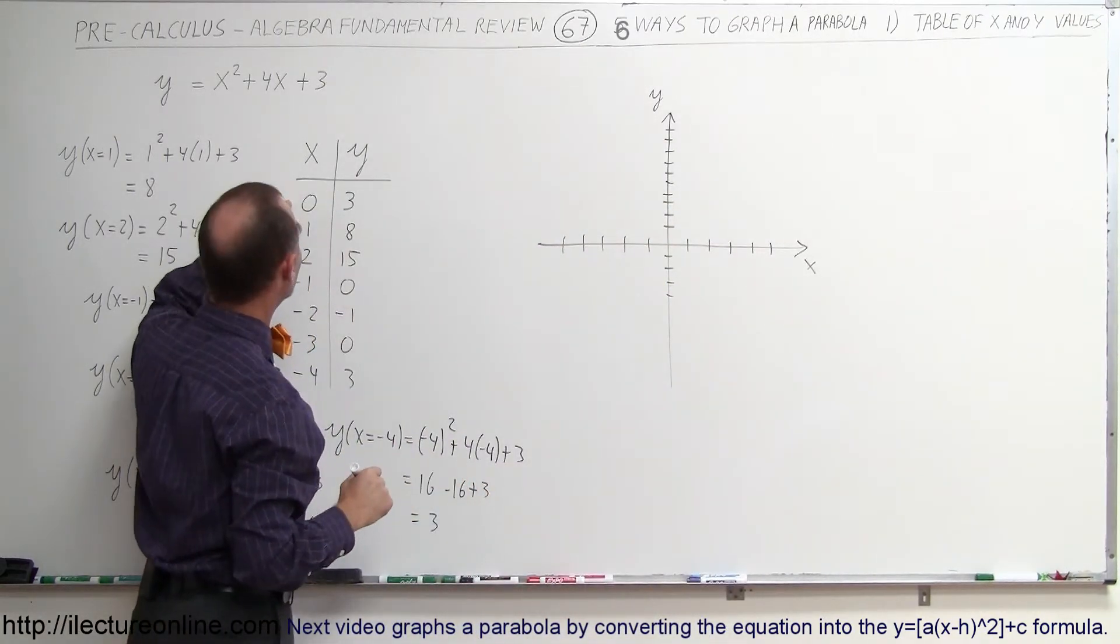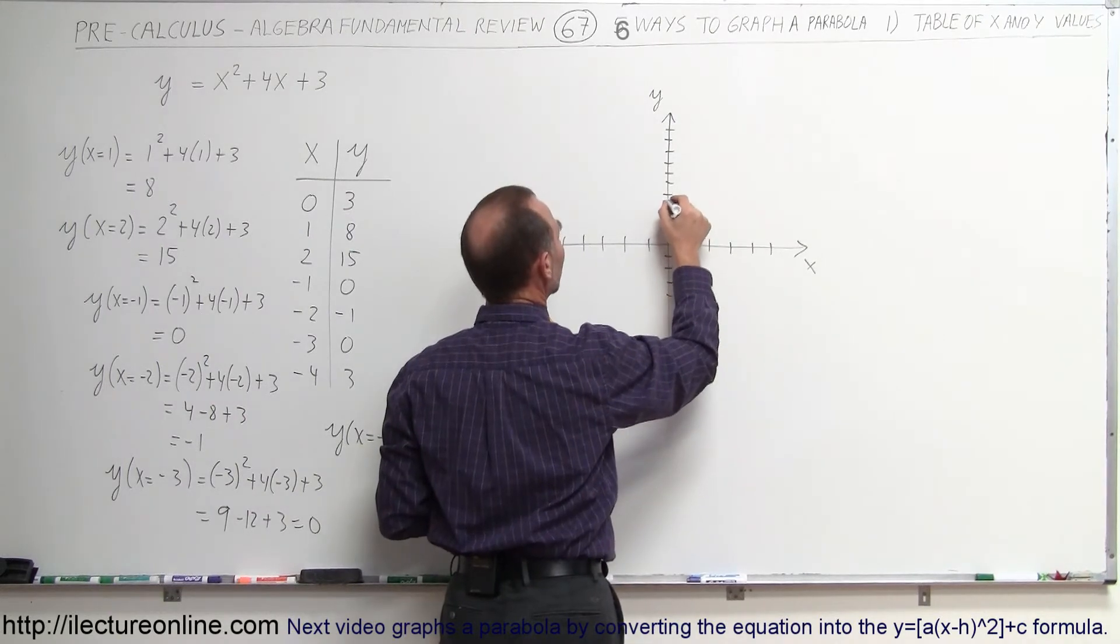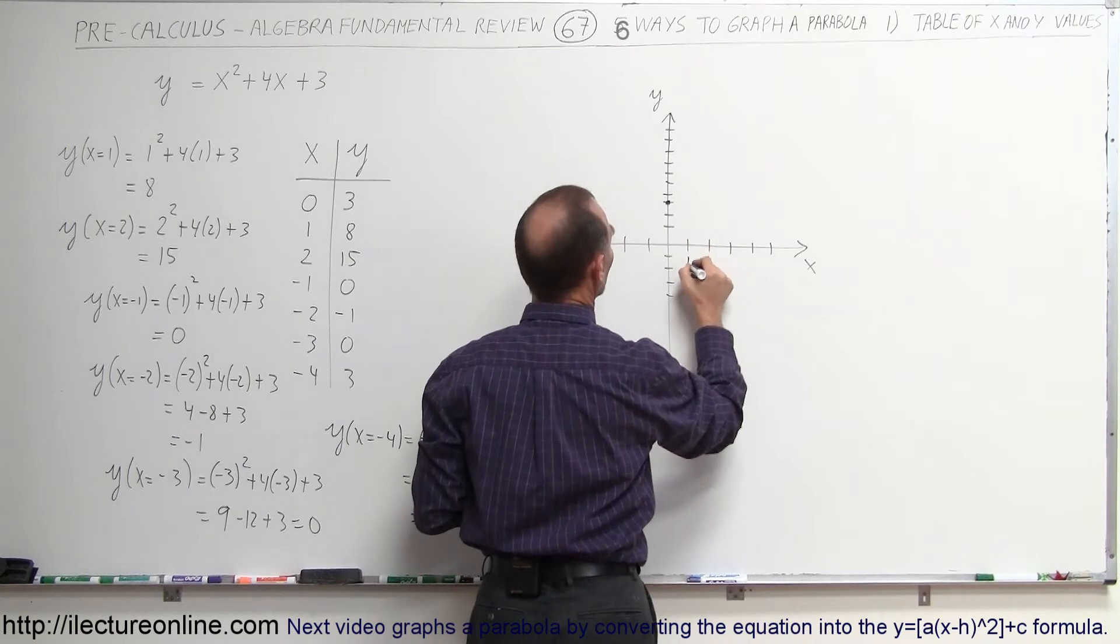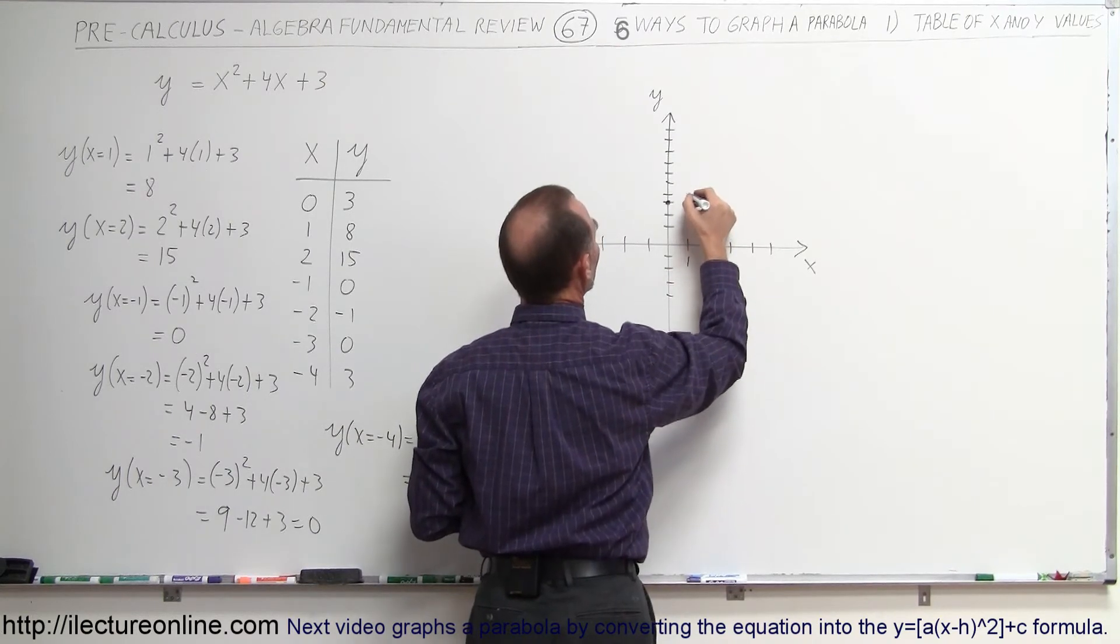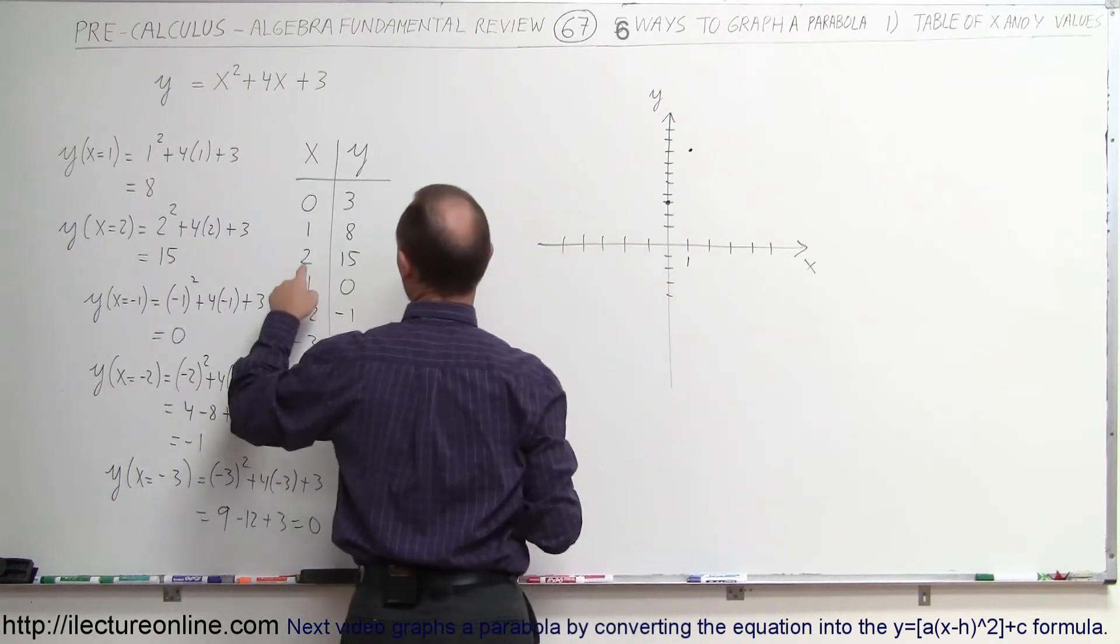So let's find the points x equals 0, y equals 3. So x equals 0, y equals 3, 1, 2, 3, that's this point right there. x equals 1, y equals 8. So x equals 1, y equals 8. 3, 4, 5, 6, 7, 8, that's this point right there. When x equals 2, y equals 15.